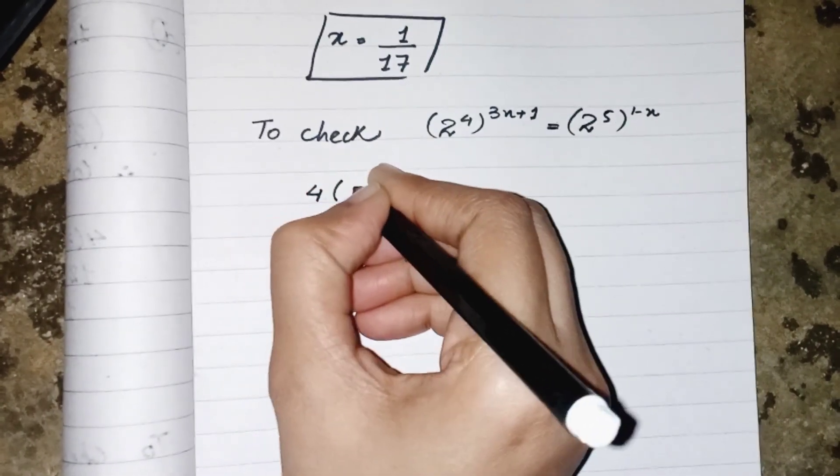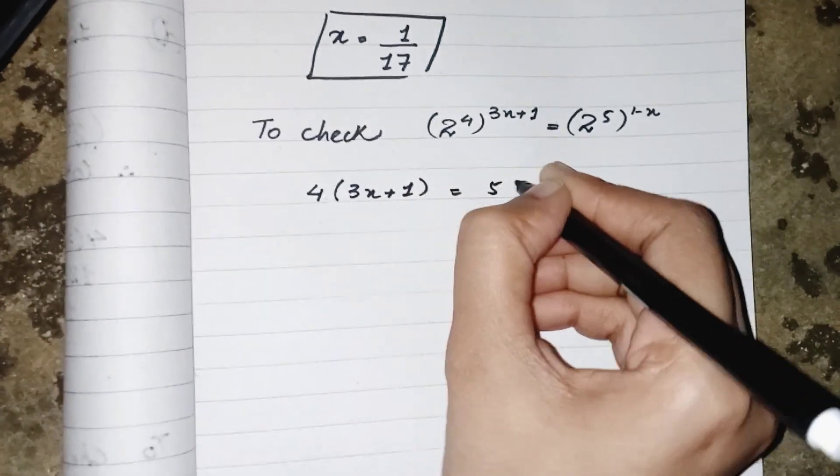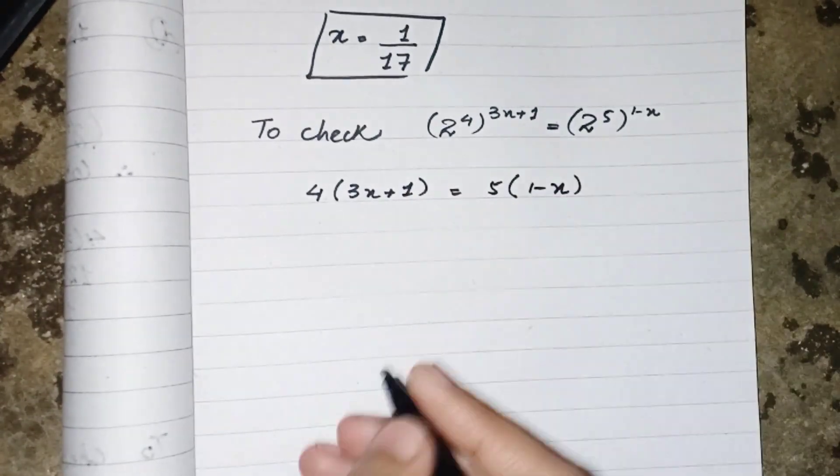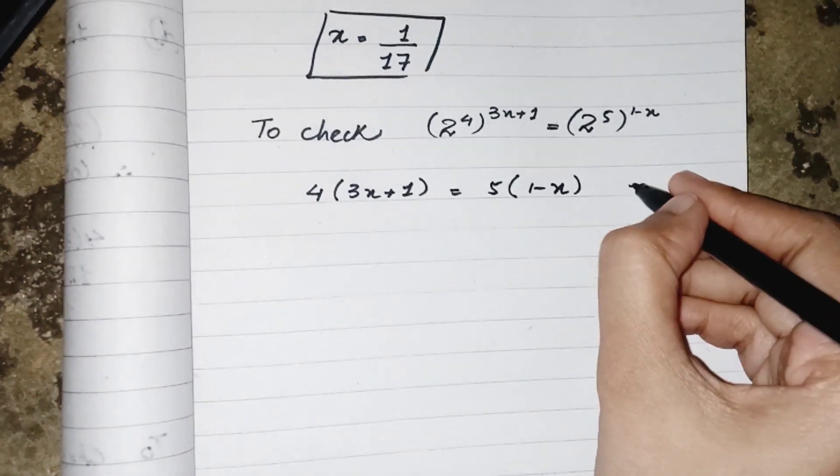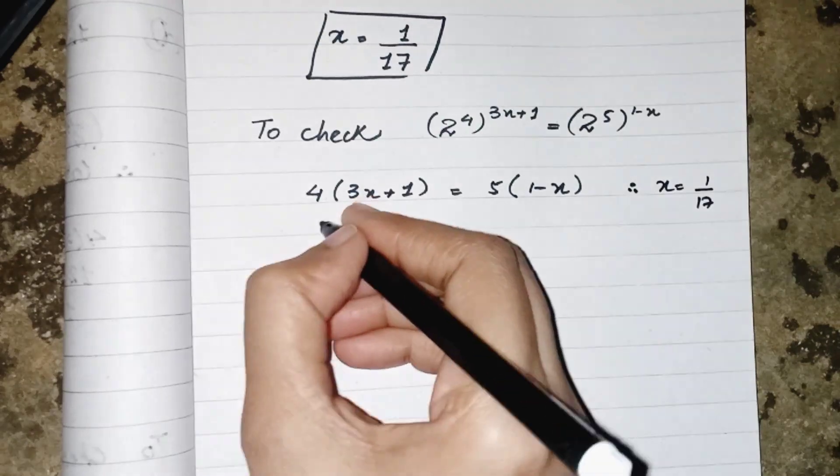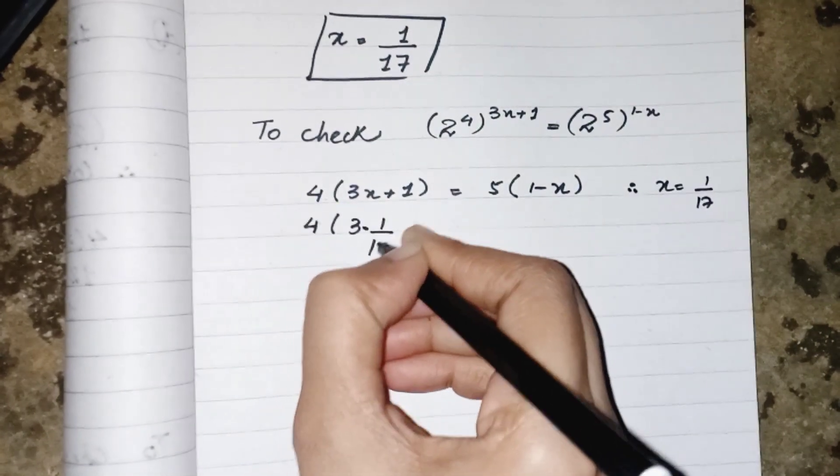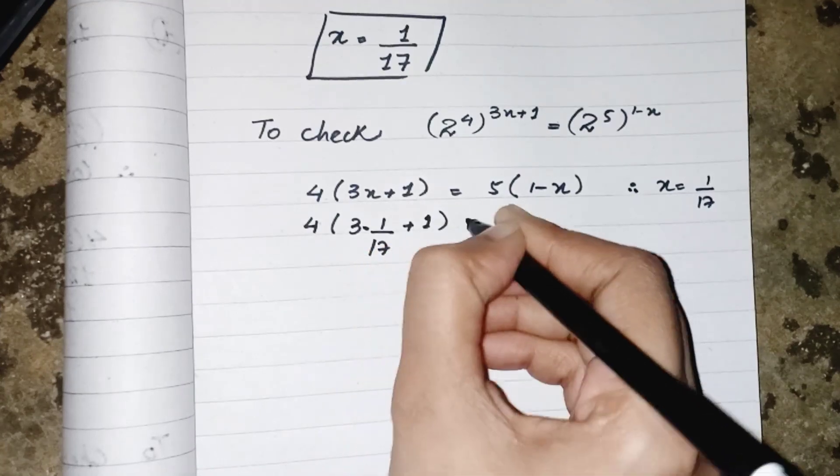4 multiply by 3x plus 1 equals to 5 multiply by 1 minus x. So now we have to put the value of x where x is equal to 1 upon 17. 4 times 3 multiply by 1 upon 17 plus 1 equals to 5 times 1 minus 1 upon 17.